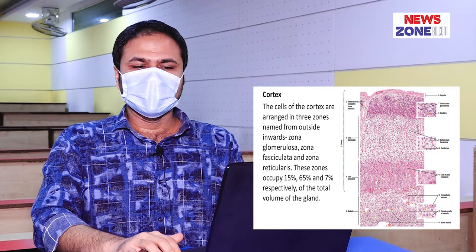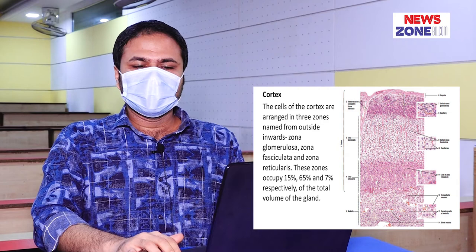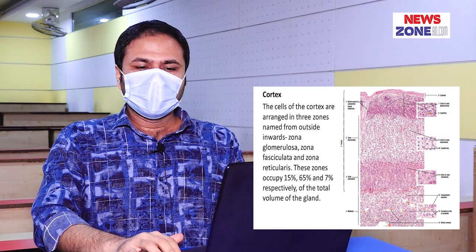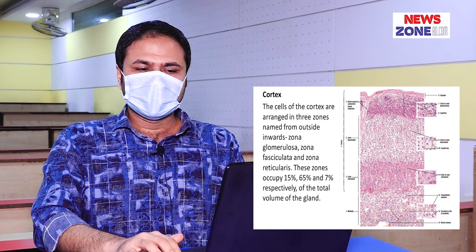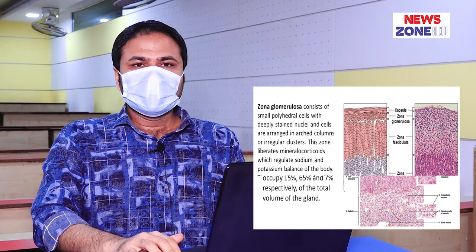Cortex of the suprarenal gland. The cells of the cortex are arranged in three zones. From outside to inside, they are: zona glomerulosa, zona fasciculata, and zona reticularis. These zones occupy 15%, 65%, and 7% respectively of the total volume of the suprarenal gland.